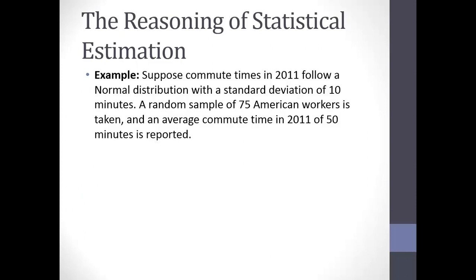As a motivating example: suppose commute times from 2011 follow a normal distribution with a standard deviation of 10 minutes, but we don't know the average commute time. We take a random sample of 75 American workers and find their average commute time was 50 minutes. So: sigma = 10, n = 75, and x-bar = 50.